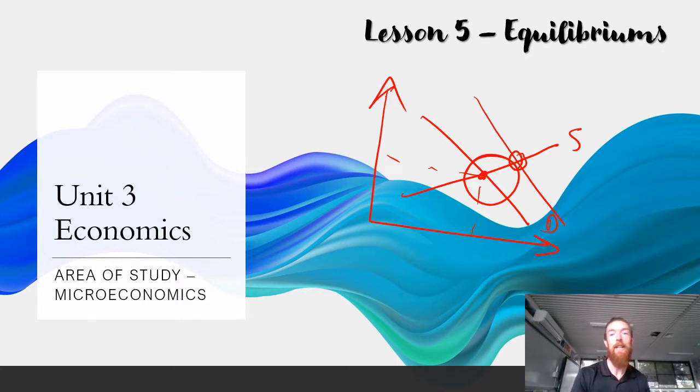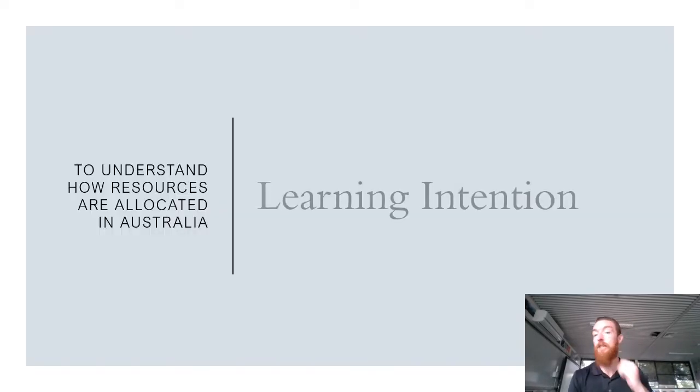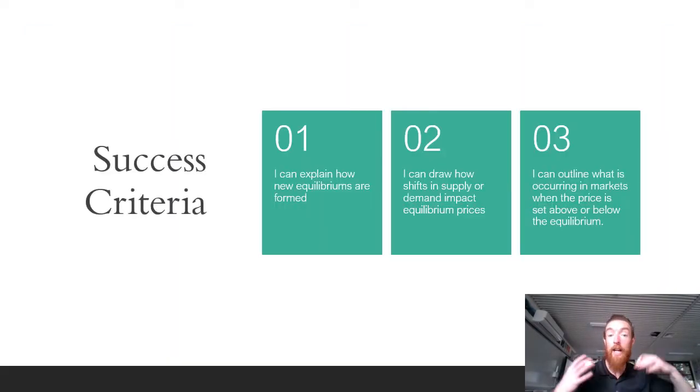Our key knowledge in this area is the effects of changes in supply and demand on equilibrium prices and quantity traded. Our learning intention is to understand how resources are allocated in Australia. Our success criteria today is that I can explain how new equilibriums are formed, I can draw how shifts in supply or demand impact equilibrium prices, and I can outline what is occurring in markets when the price is set above or below the equilibrium.